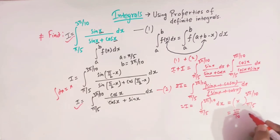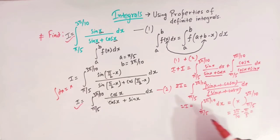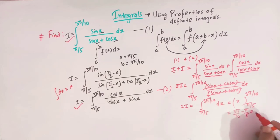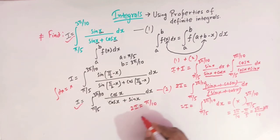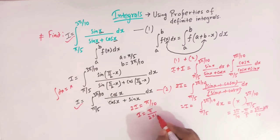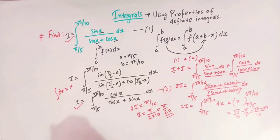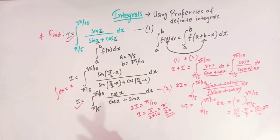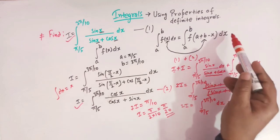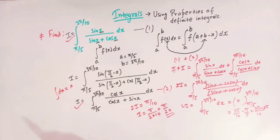Substituting the limits and taking the difference: 3 pi by 10 minus pi by 5. Converting to a common denominator of 10: 3 pi minus 2 pi over 10 gives pi over 10. So 2I equals pi over 10, which means I equals pi over 20. So the value of this definite integral is pi over 20. In this lecture we have seen how we can make use of this property of definite integrals to solve these types of integrals.